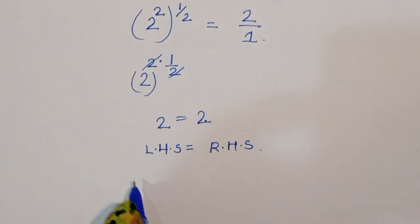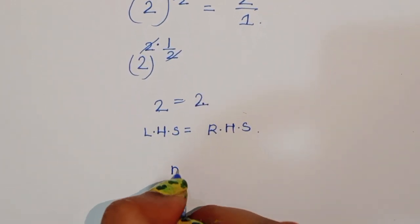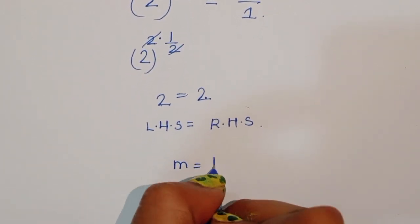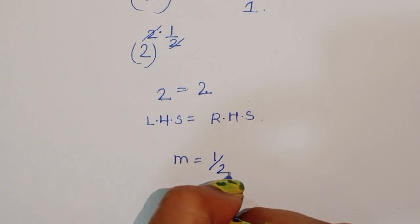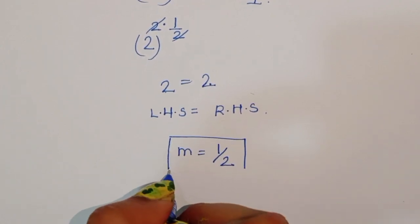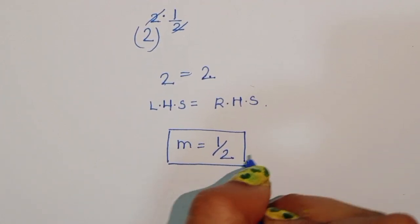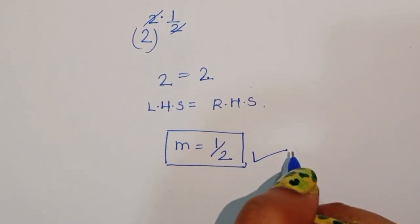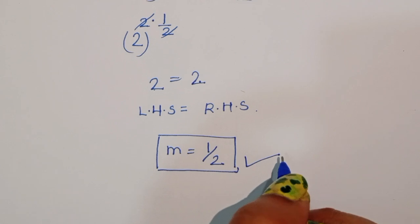So, the value of m is equal to 1 upon 2. This is the correct solution.